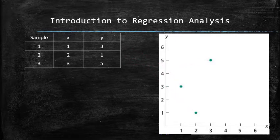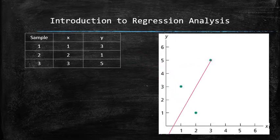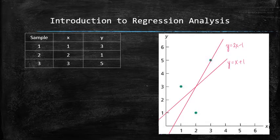Let's try to fit a few lines. y equals 2x minus 1 and y equals x plus 1. How do we decide which of the lines is a better fit for the data according to the least squares criterion?